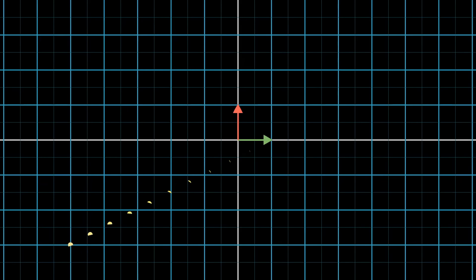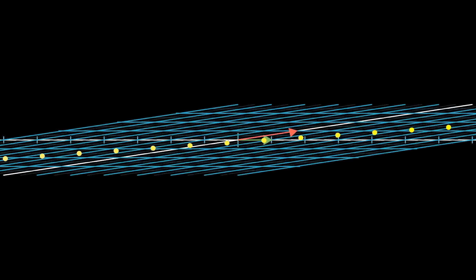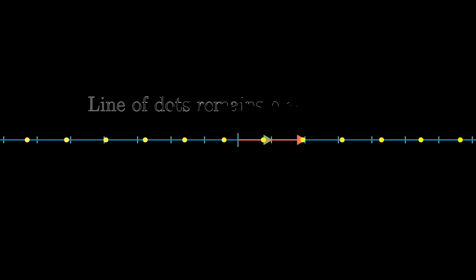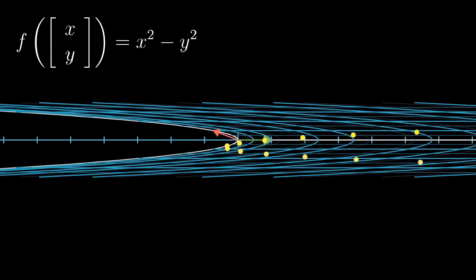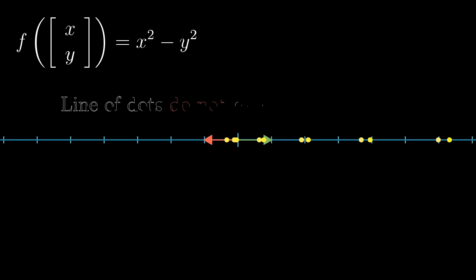If you take a line of evenly spaced dots and apply a transformation, a linear transformation will keep those dots evenly spaced once they land in the output space, which is the number line. Otherwise, if there's some line of dots that gets unevenly spaced, then your transformation is not linear.